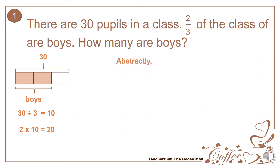Abstractly, I can solve this one by setting up an equation such that n is equal to the number of boys, because I want to know the number of boys. So I will put n is equal to two-thirds of the entire class, which is 30.